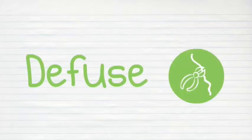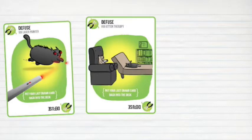Unless that player has a Diffuse card, which can diffuse the kittens using things like laser pointers, kitten therapy, and catnip sandwiches.